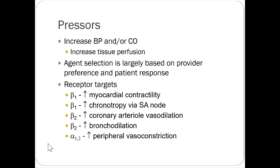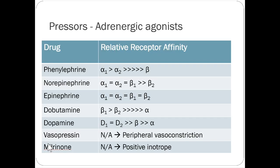Pressors increase blood pressure and/or cardiac output, thereby increasing tissue perfusion. The choice is largely provider preference, but understanding the receptors the different drugs hit guides treatment. Beta-1 receptors increase myocardial contractility and heart rate via the sinoatrial node. Beta-2 helps with coronary arterial vasodilation and bronchodilation. Alpha activity helps with peripheral vasoconstriction.